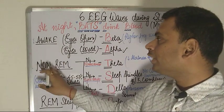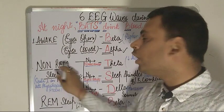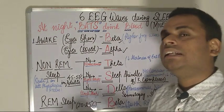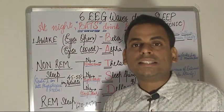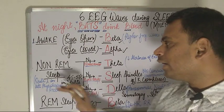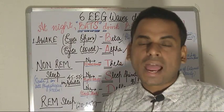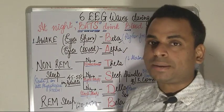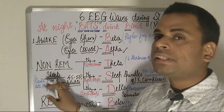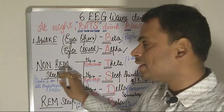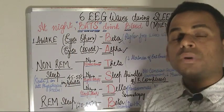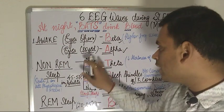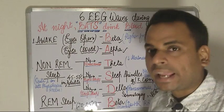Moving on to the next stage of sleep: the non-REM sleep. Non-REM sleep is a quiet sleep where all the physiological processes of the body slow down. It stands for non-rapid eye movement sleep, meaning there is no rapid eye movement during this sleep. It has been broadly divided into three categories: N1, N2, and N3.